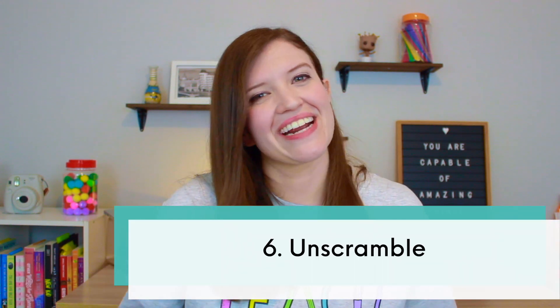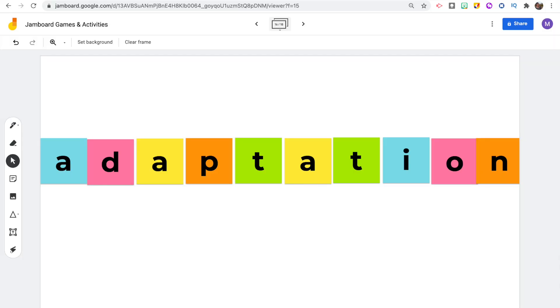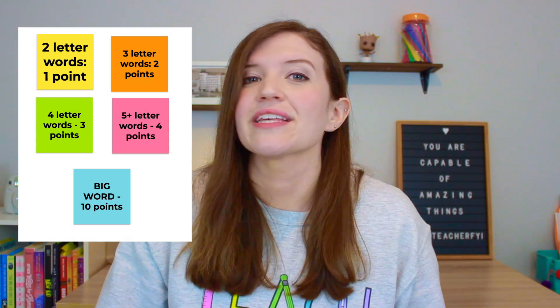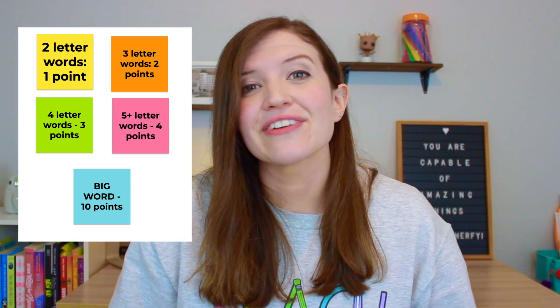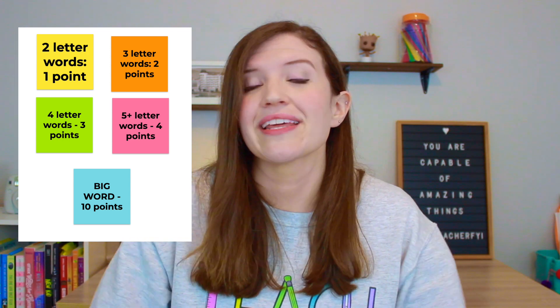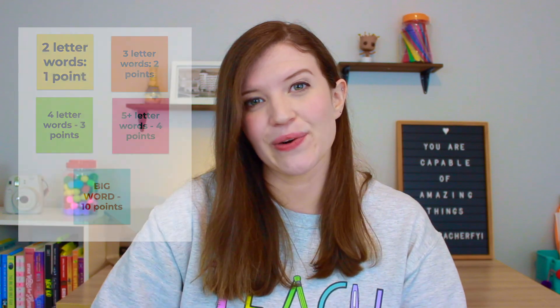The sixth game is Unscramble. I think of a word, then use one sticky note for each letter in that word and mix them all up. Students work in teams to make as many words as they can using those letters. Depending on how many letters are in each word, that is worth a certain amount of points. If they are the first team to guess the big word using all of the letters, that is worth an extra 10 points. I usually set a timer for about five minutes and then we add up points to see who wins.